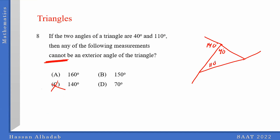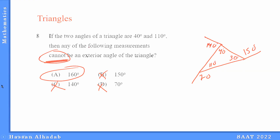If this is 110, what's the measurement of the exterior angle? 70. So 70 is also wrong. So what's left? The remaining angles are 110 and 40 accounted for, so the third angle is 30. The exterior angle of 30 is 150. So 150 is also wrong. Therefore 160 cannot be an exterior angle.